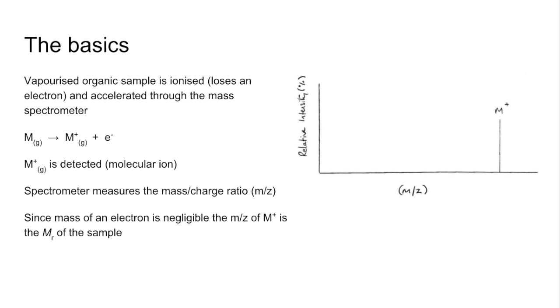Now the spectra don't look as simple as that in reality, they're a lot more complicated, with lots and lots of lines. We'll look at what causes that now. That's caused by fragmentation. The excess energy from the ionization process can be transferred into the molecular ion and make it split down further or fragmented.